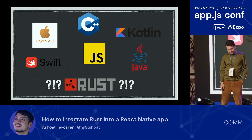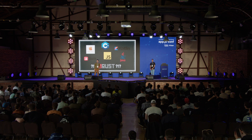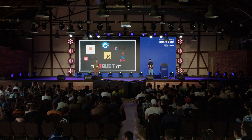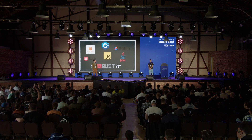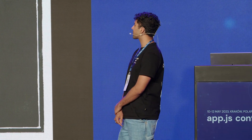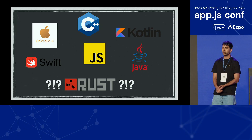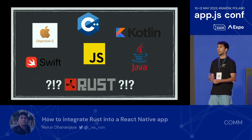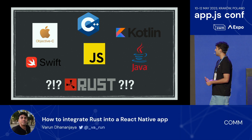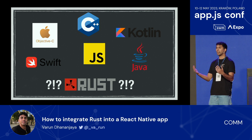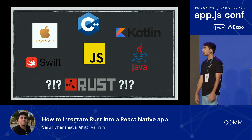Show of hands — who here is familiar with Rust? That's like maybe 25% of the audience. Well, Rust is a kind of low-level language, more akin to C++ or C. But the advantages are it's memory-safe and it's type-safe, and it operates at a higher level. Also, it has a package manager similar to NPM called Cargo.